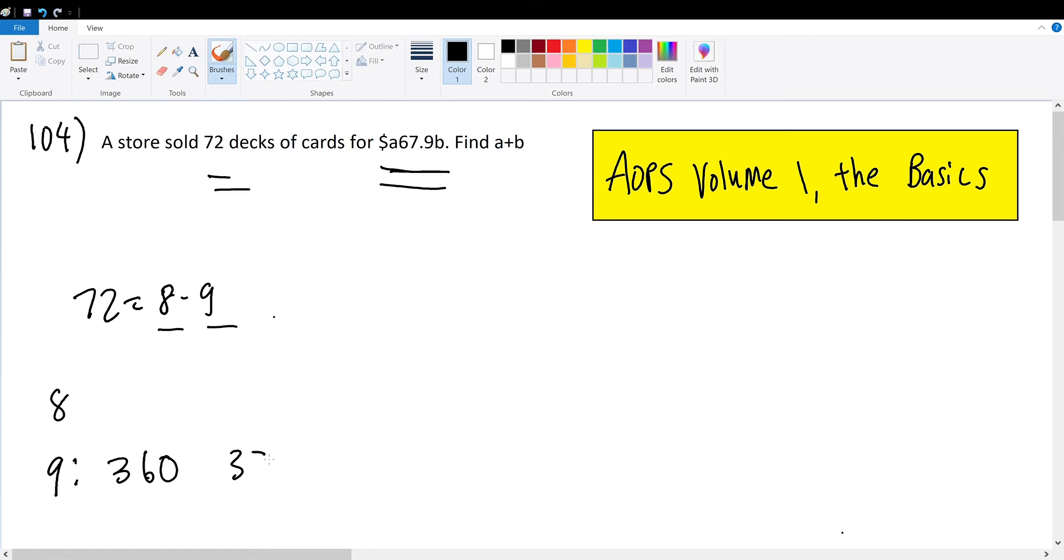What about 35? Well, 3 plus 5 is 8. 8 is not divisible by 9. Hence, 35 is not divisible by 9.